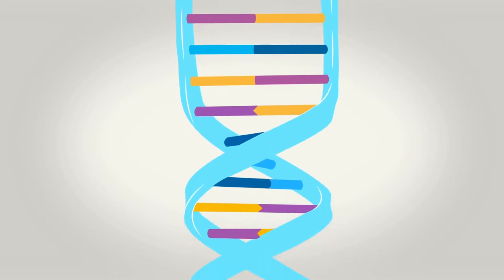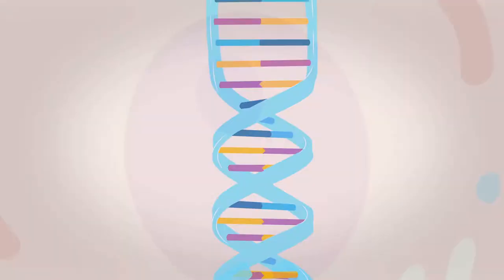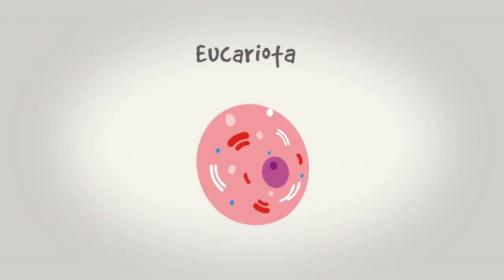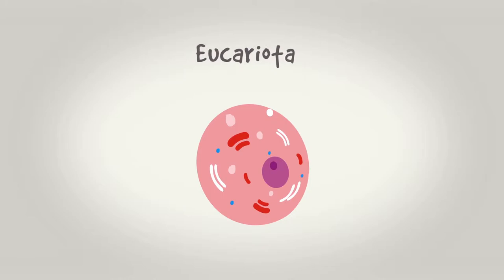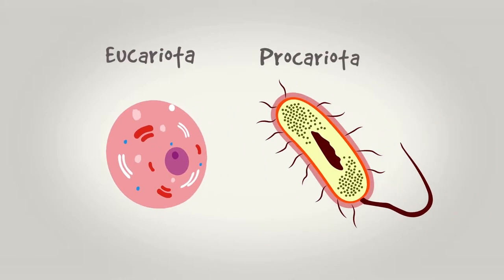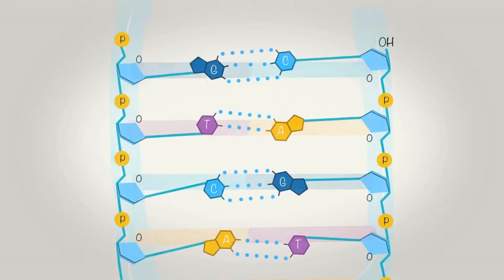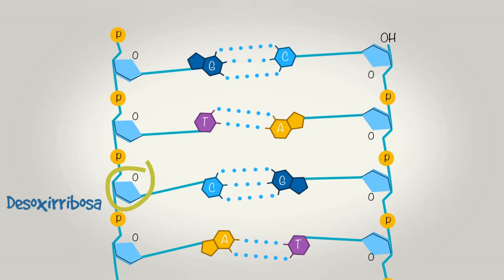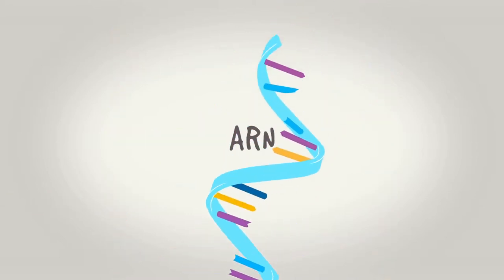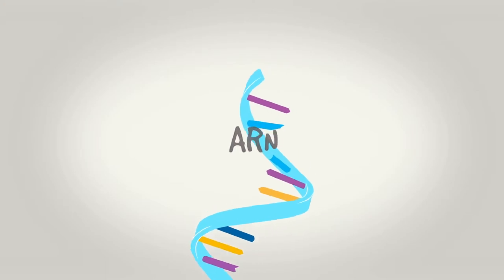Toda la estructura en conjunto se resguarda en el interior del núcleo de las células eucariotas, mientras que en células procariotas está suspendido libremente en el citoplasma celular. Todos los nucleótidos en el ADN presentan como azúcar la desoxirribosa, mientras que en el ARN todos contienen ribosa. De esta condición derivan los nombres de estas dos moléculas.